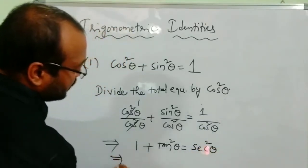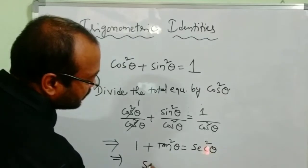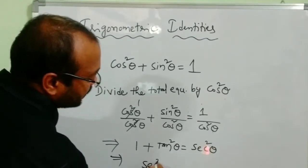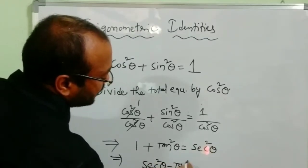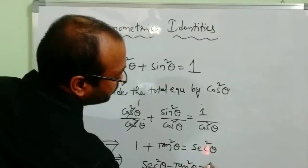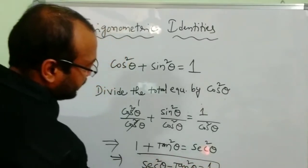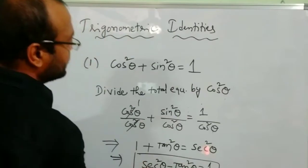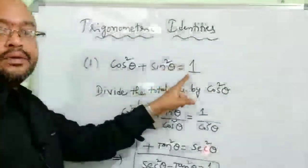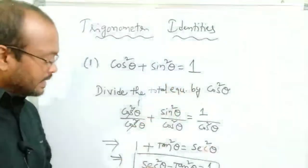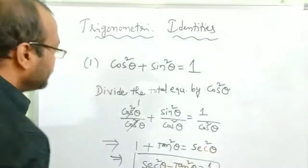Take tan²θ to the right side: sec²θ - tan²θ = 1. This is our second identity. The first identity is cos²θ + sin²θ = 1. The second identity is sec²θ - tan²θ = 1.